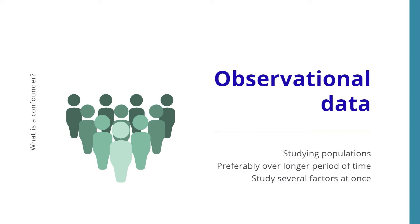That is why epidemiologists generally use a lot of observational data. And what is observational data? These are data that constitute a large group of people that we preferably follow for a longer period of time until the event or outcome — in our example, mortality — occurs. Another advantage is that we can actually study several factors at once. Obviously, if we study a certain population and we ask people for their smoking habits, we can also ask them how old they are, what other diseases they have, what their weight is, and you can imagine that we can measure many things at once. This is a large advantage of these types of large studies.